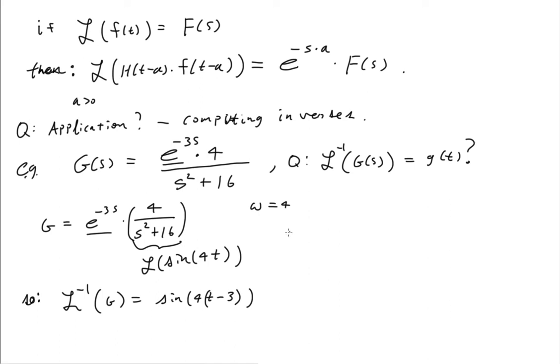So the idea here is that if sine 4t is equal to F of t, and Laplace transform of sine 4t, we know that from the Laplace transform tables, that's going to be 4 over s squared plus 16.